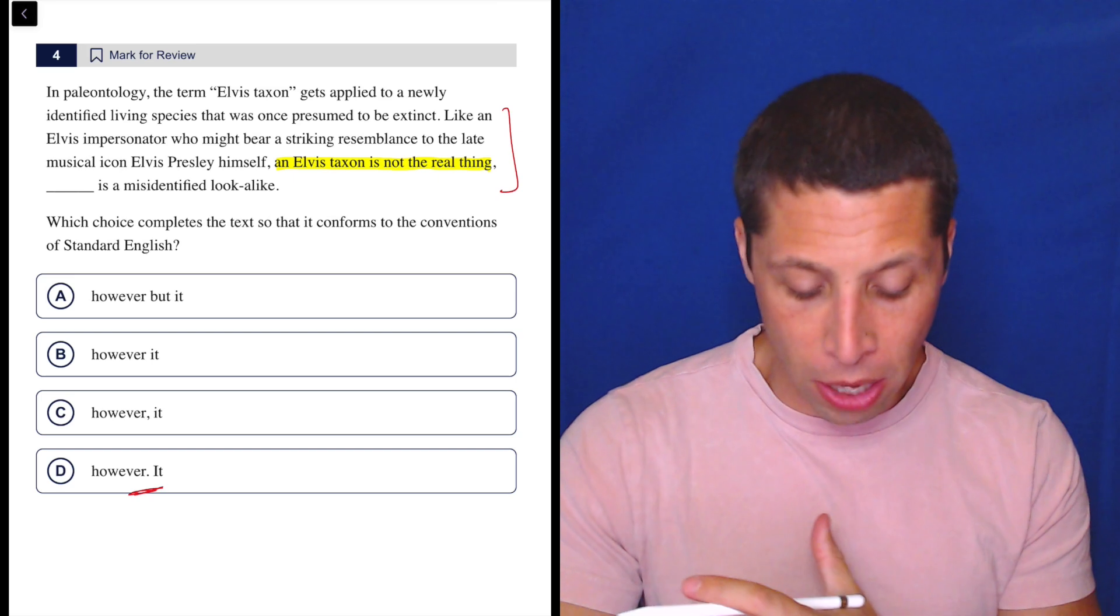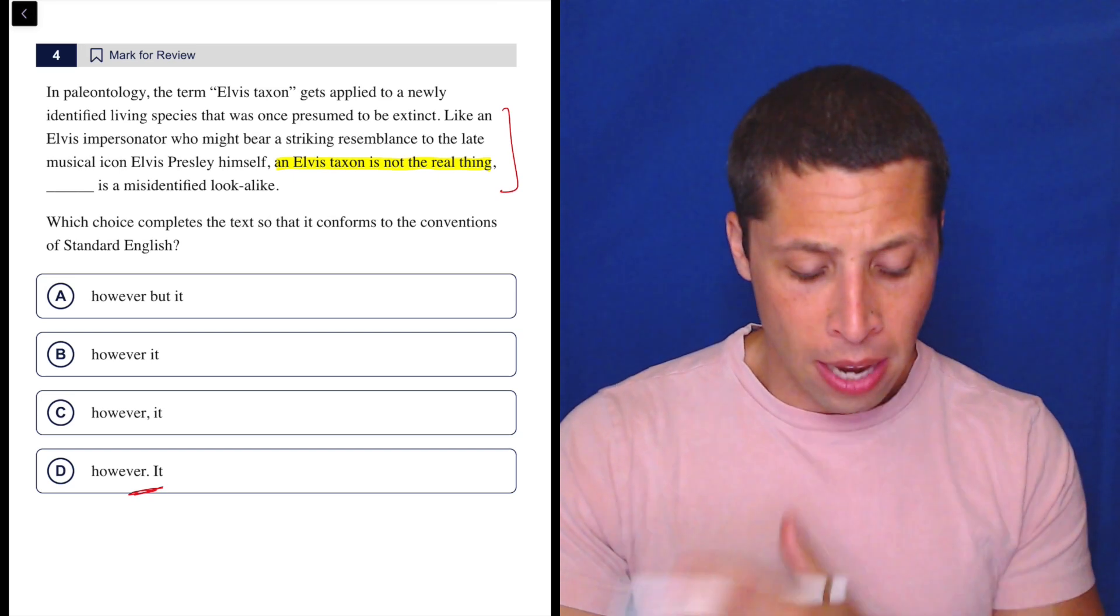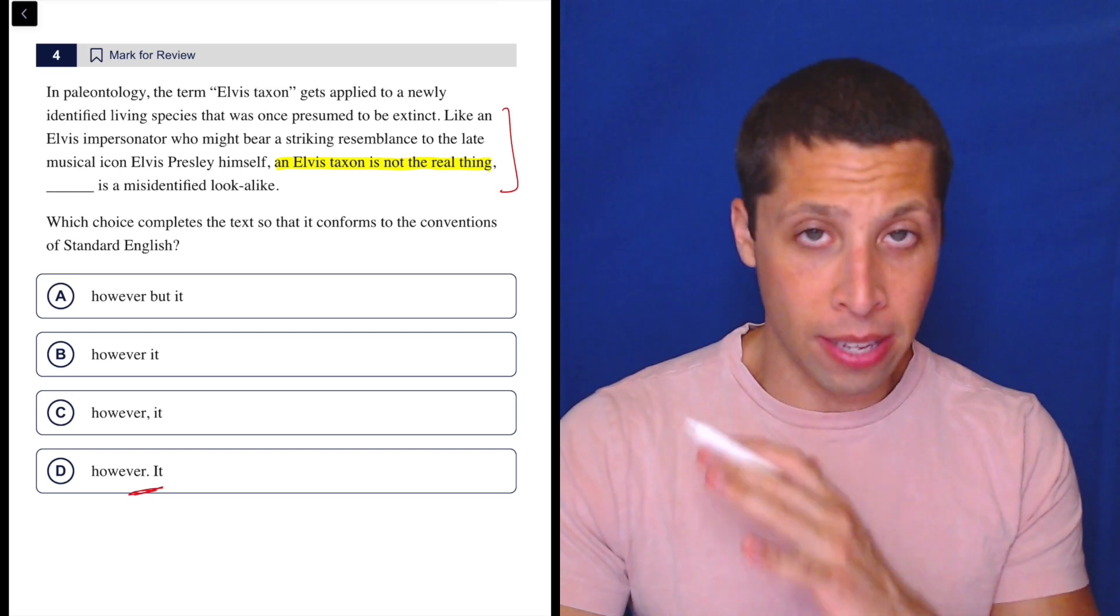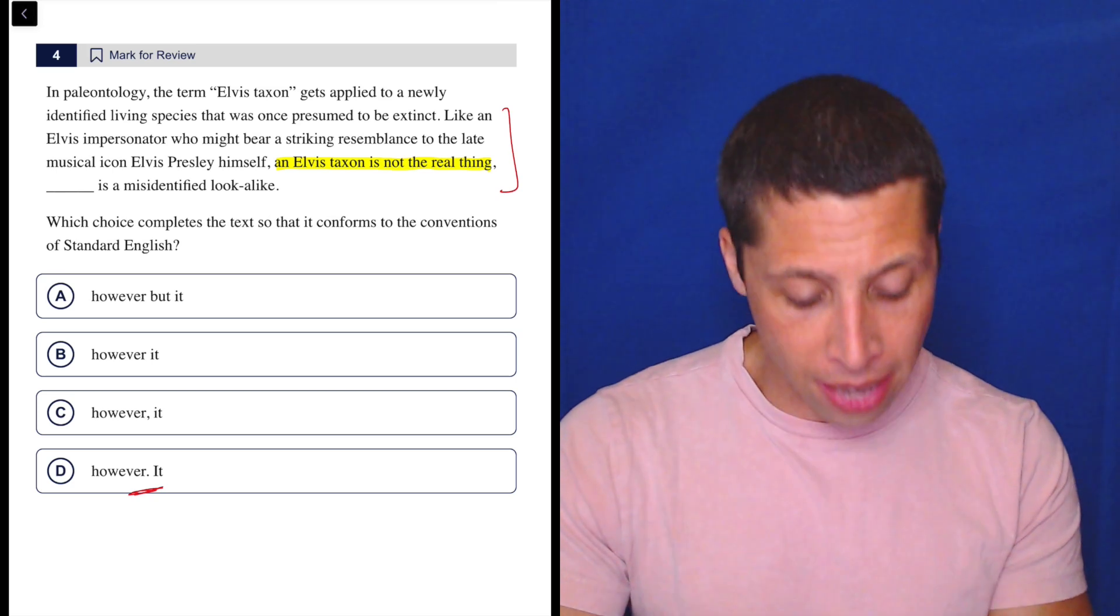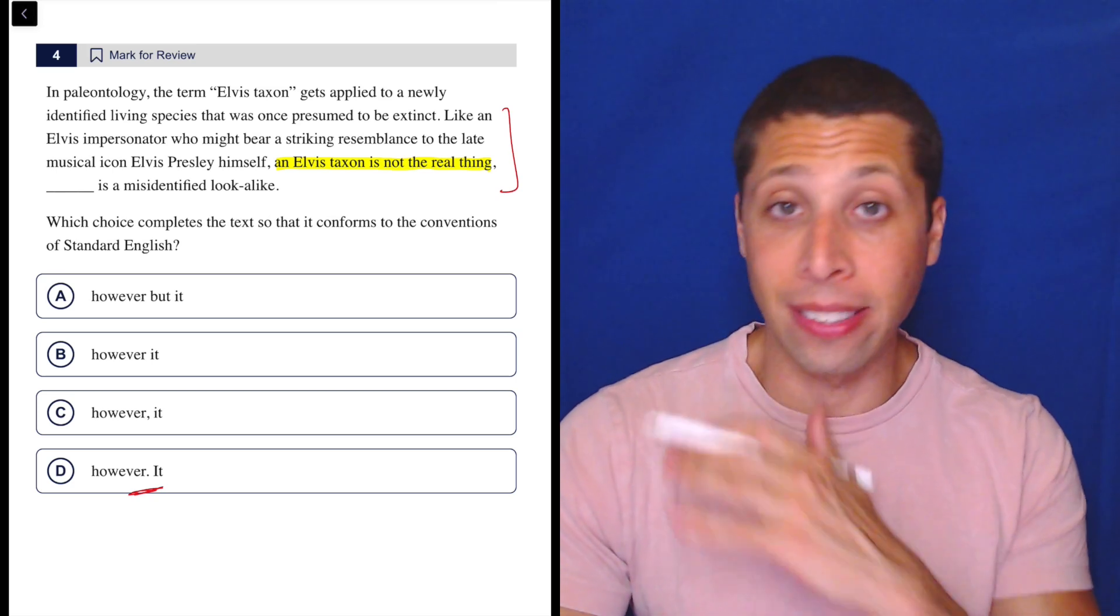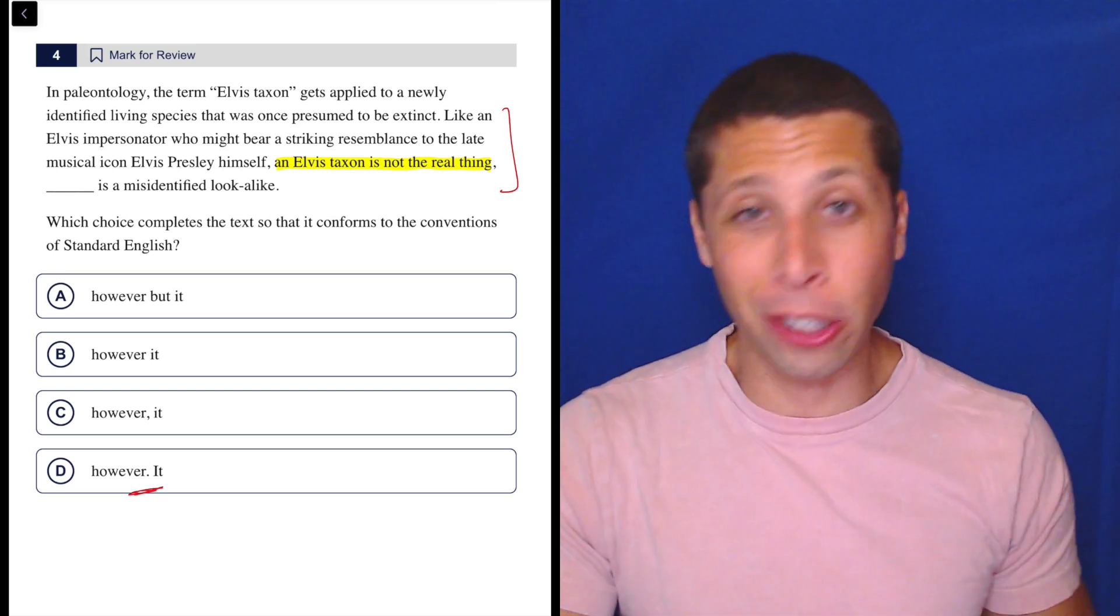Now the word however kind of throws me off. It's a very long intro to this sentence, but that part in yellow is, that's the sentence. An Elvis taxon is not the real thing. That could stand alone. We could get rid of all the extra clauses and that'd be fine.